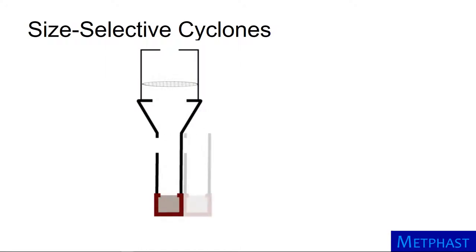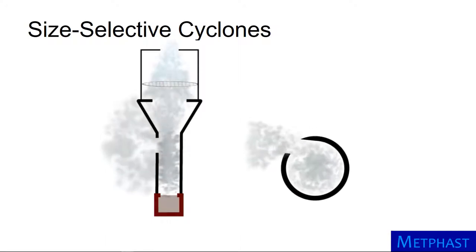Taking a closer look, the inlet is offset such that cyclonic flow is established. All of the red small particles move with the airflow passing to the filter.